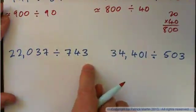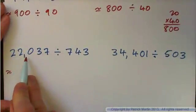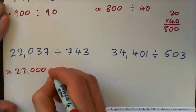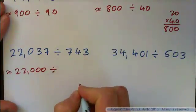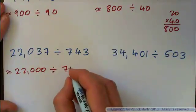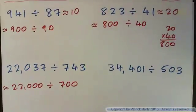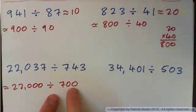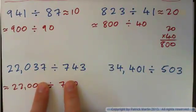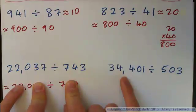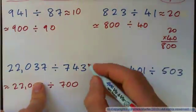For this one, round to the nearest thousand — so we've got about 22,000. Round the divisor to the nearest hundred and you get 700. Now 22,000 divided by 700: if you take two zeros off each number it's like 220 divided by 7. Seven into 22 goes about three times, and 7 into 0 is 0, so this is approximately 30.